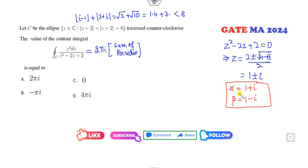I can check 1-i. If you substitute 1-i, it's -i-1 and 1+i is 3-i. This is √2, this is √(9+1) = √10, which is definitely less than 8. So both are inside the elliptical region.